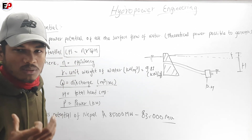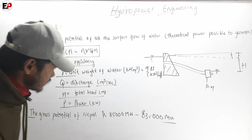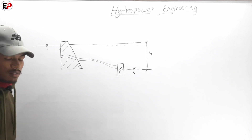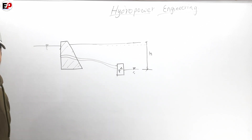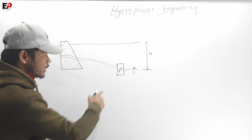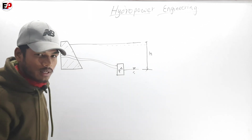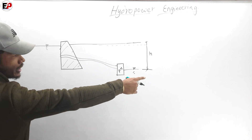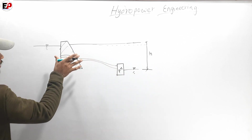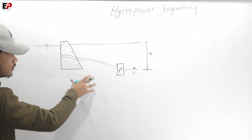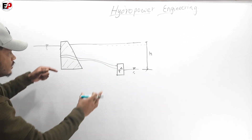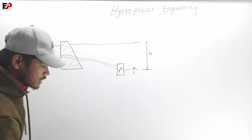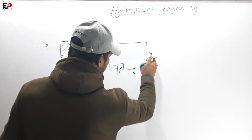There are two parts of the problem, and you will find the small derivation. The difference between the levels is the key difference we need to consider.